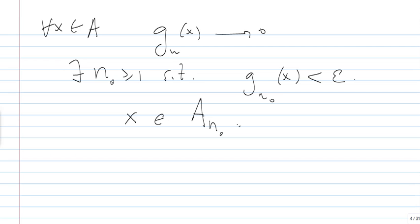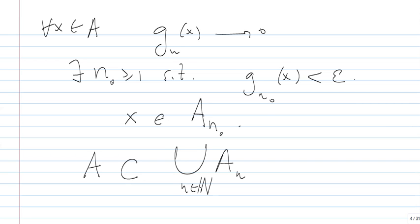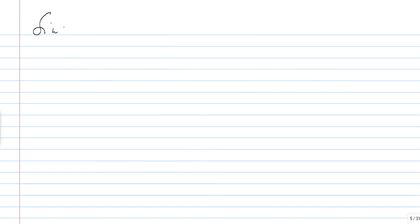In other words, A is contained in the union of all the An's. We now have a countable family of open sets which covers A, with A being compact.